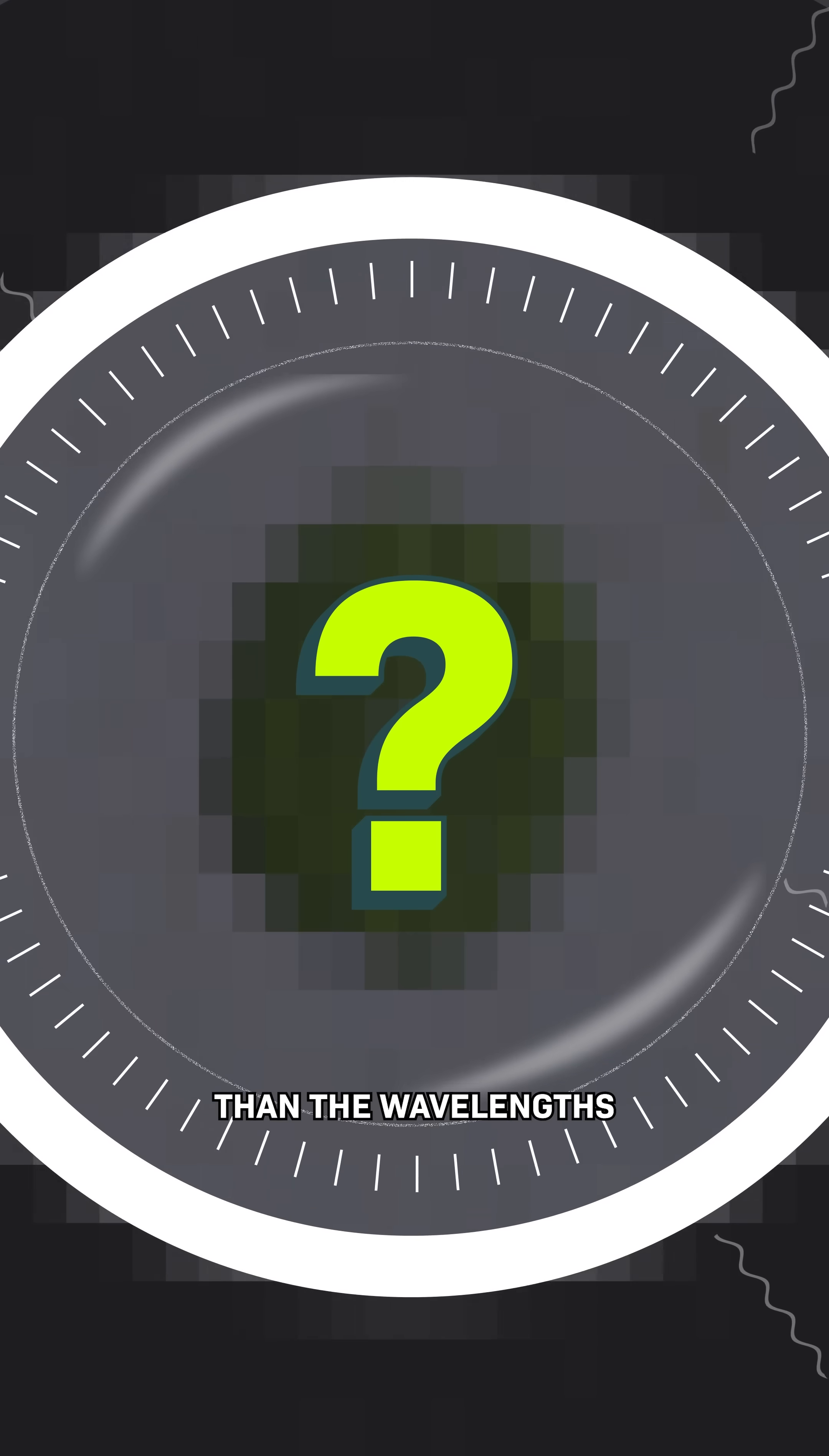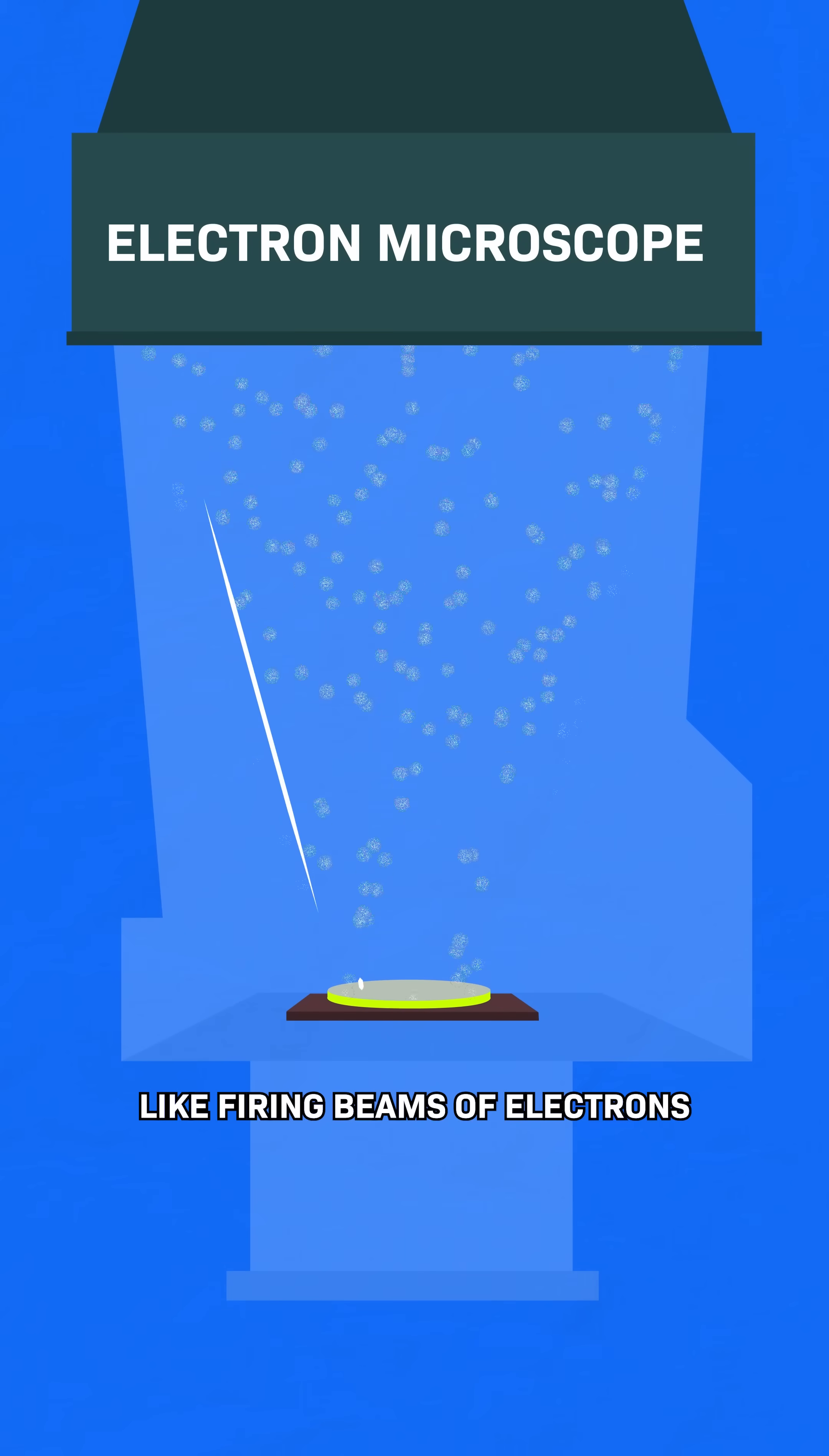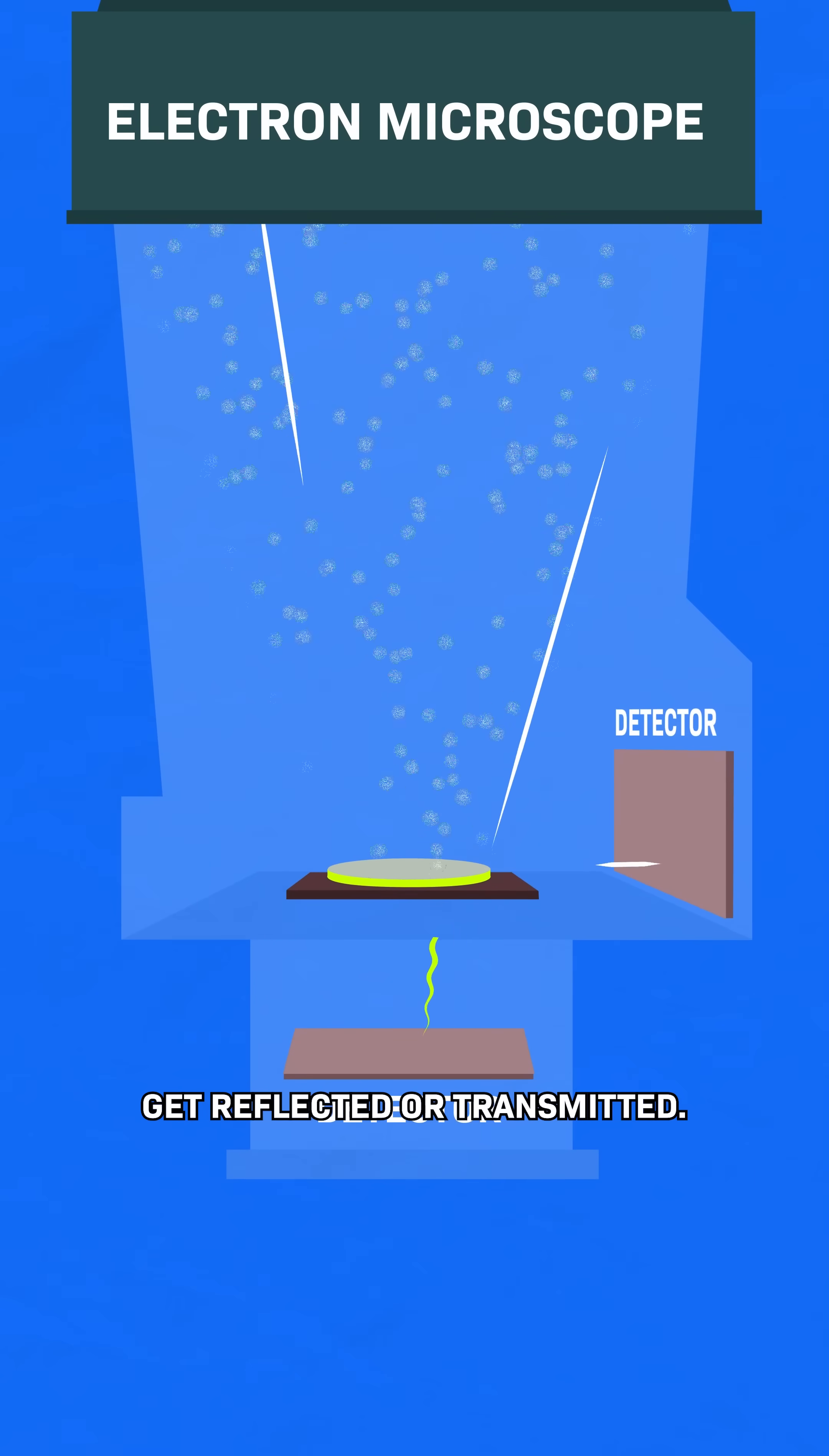objects get even smaller than the wavelengths of visible light we're using to see them, so we need something even smaller, like firing beams of electrons, and then measuring how they get reflected or transmitted.